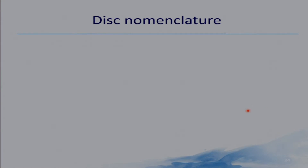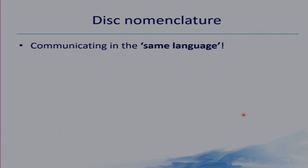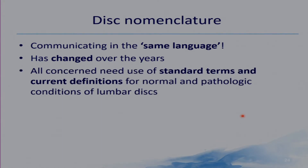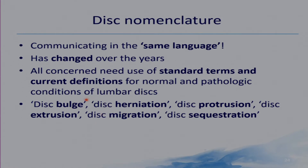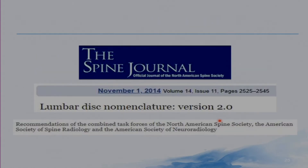Disc nomenclature — it is very important that clinicians and radiologists communicate in the same language, because disc nomenclature has changed over the years. All concerned need to use standard terms and current definitions for normal and pathological conditions of lumbar discs. There are various terms: disc bulge, disc herniation, disc protrusion, disc extrusion, disc migration, and disc sequestration — all with different and specific meanings. Lumbar disc nomenclature version 2.0, published in the Spine Journal of November 1st, 2014, gives a good account of disc nomenclature and was used as a guide for the following slides.